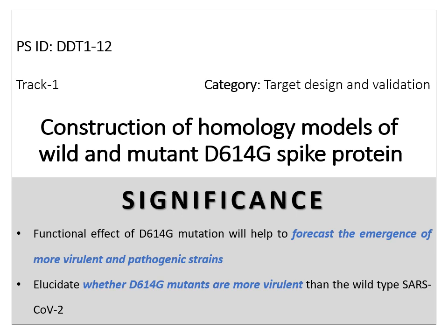This problem statement is on the construction of homology models of wild and mutant D614G spike protein. The significance of this study is that the functional effect of the D614G mutation will be investigated, which will help predict the emergence of more virulent strains of SARS-CoV-2.